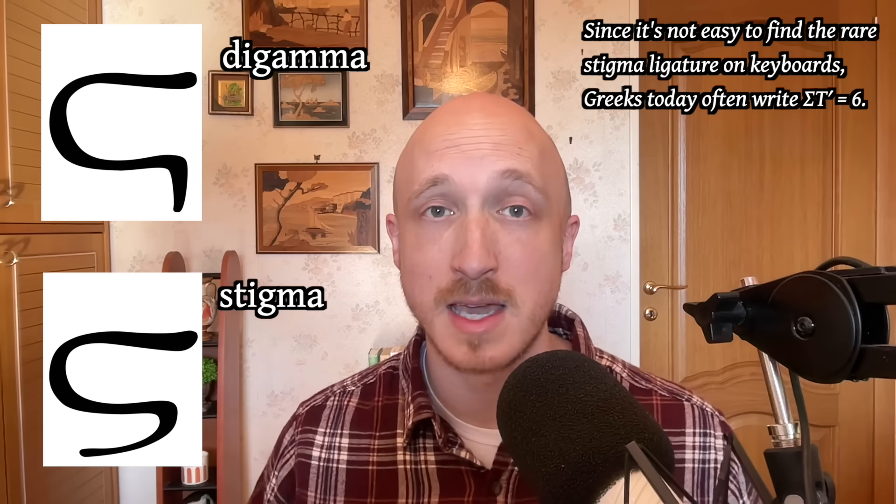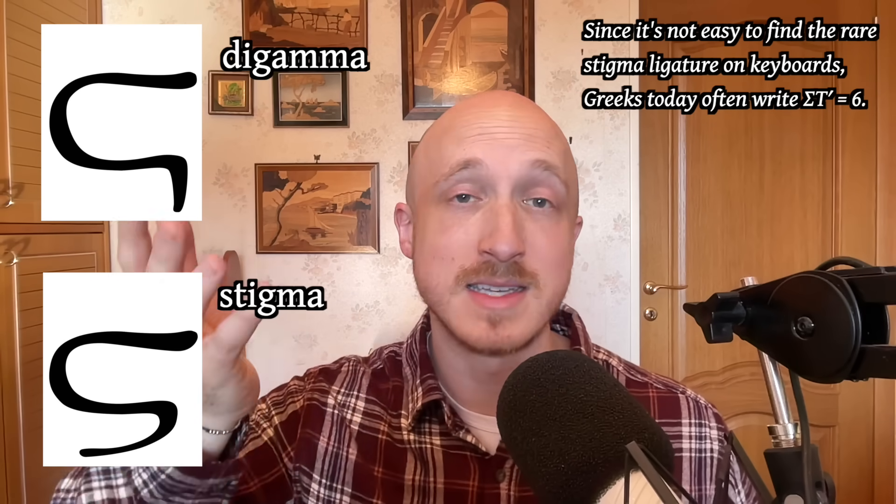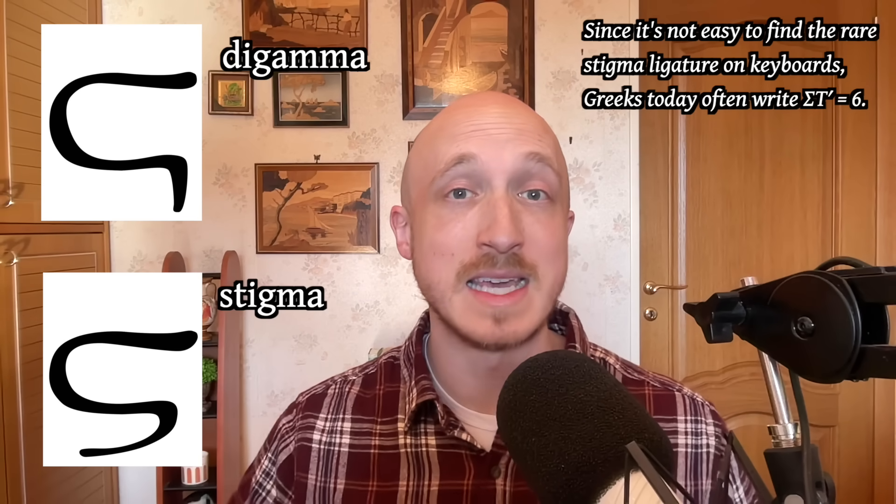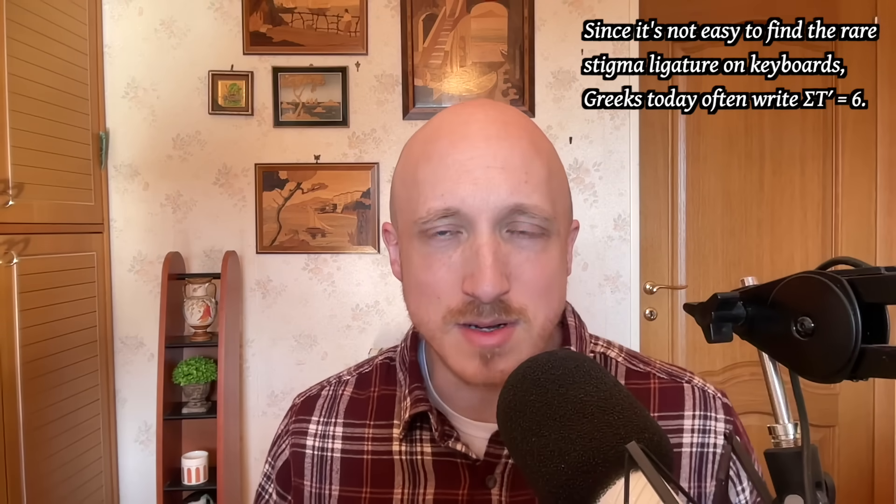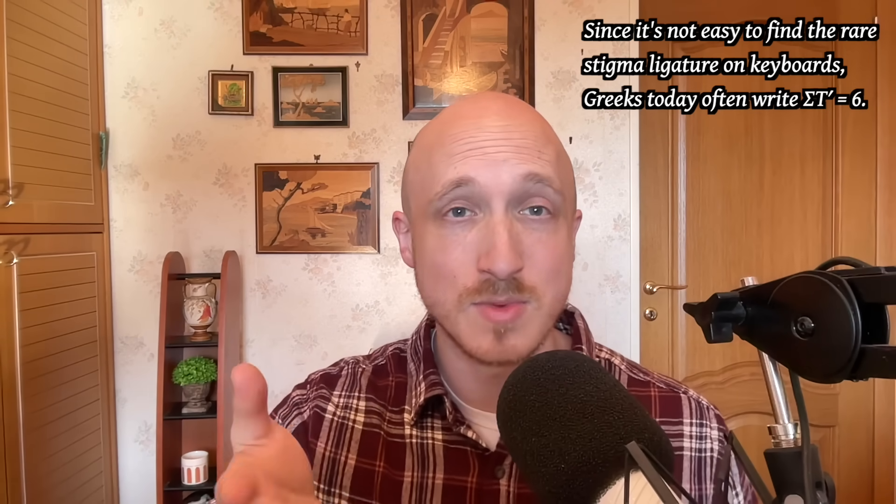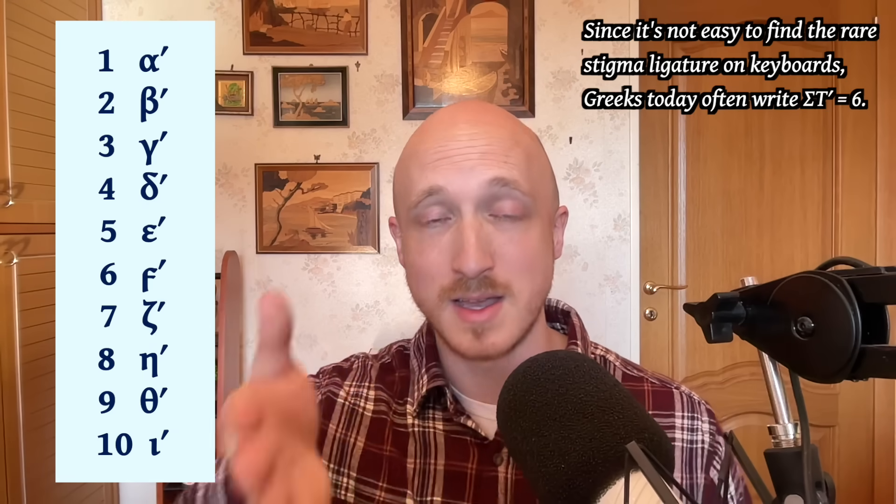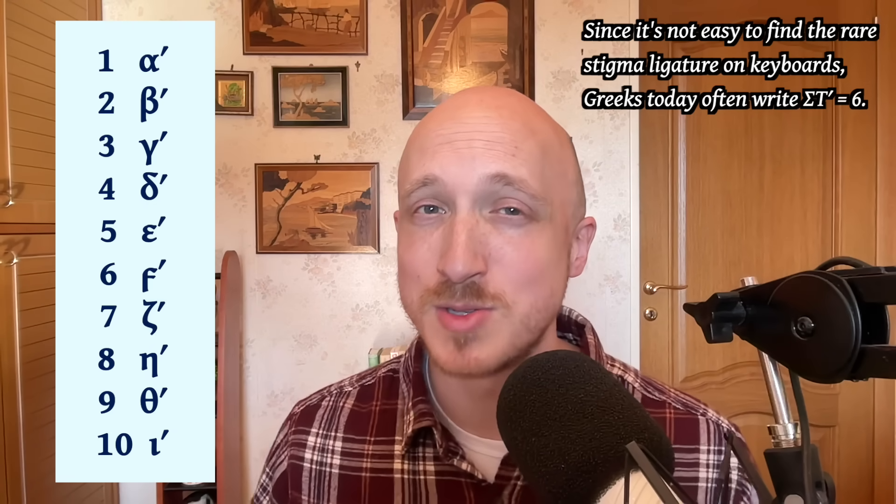Now you're probably realizing where the confusion comes from. The cursive digamma looks very much the same as the stigma ligature, and for that reason, from the Middle Ages up to the present day, Greeks have thought that the number six is stigma, when in reality it's always been digamma. For that reason, instead of writing the ligature which is not a part of the alphabet or the ancient numbering system, I'm using digamma and I encourage you to do the same. So six is digamma plus the keraia, seven is zeta plus the keraia, eight is the eta plus the keraia, nine is theta keraia, and ten is the iota plus the keraia.